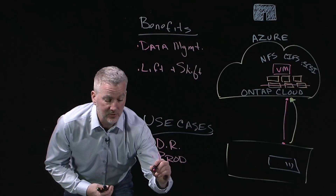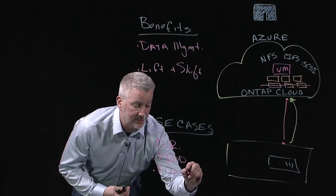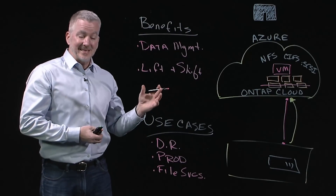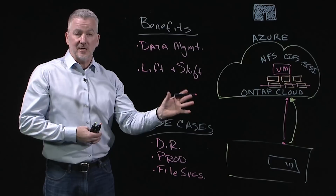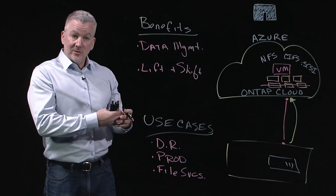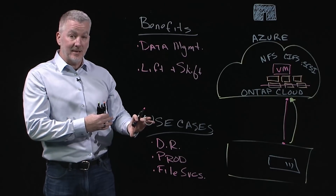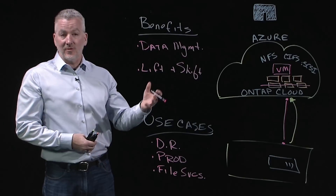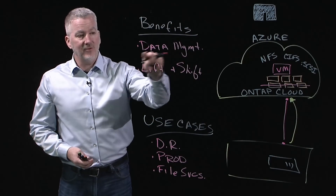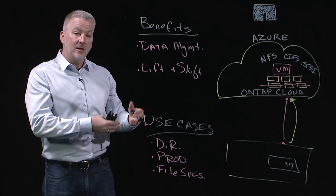Another use case customers use ONTAP Cloud for is file services in the public cloud. They can simply and easily move their organizational data up to an ONTAP Cloud system and use the same kind of Active Directory integration for organizational access to that data that they do on-premises — which is not something natively available in the public cloud, at least not yet. They also benefit from instant point-in-time recovery for their data.